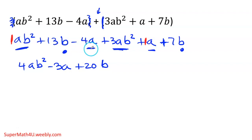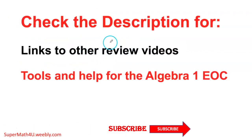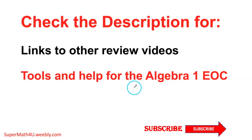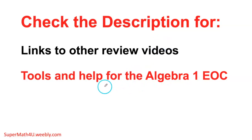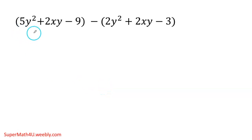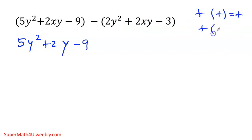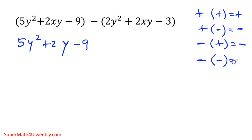Now let's get into subtraction. Always check the description of the video — there are other links and more tools to help you review for the Algebra 1 EOC. I have two parentheses with a minus in between, so I'm subtracting. Nothing in front of the first parentheses, so I can get rid of it. But there's a minus here, and a minus is going to change the signs on the inside — a minus and a minus with a minus gives you a positive.